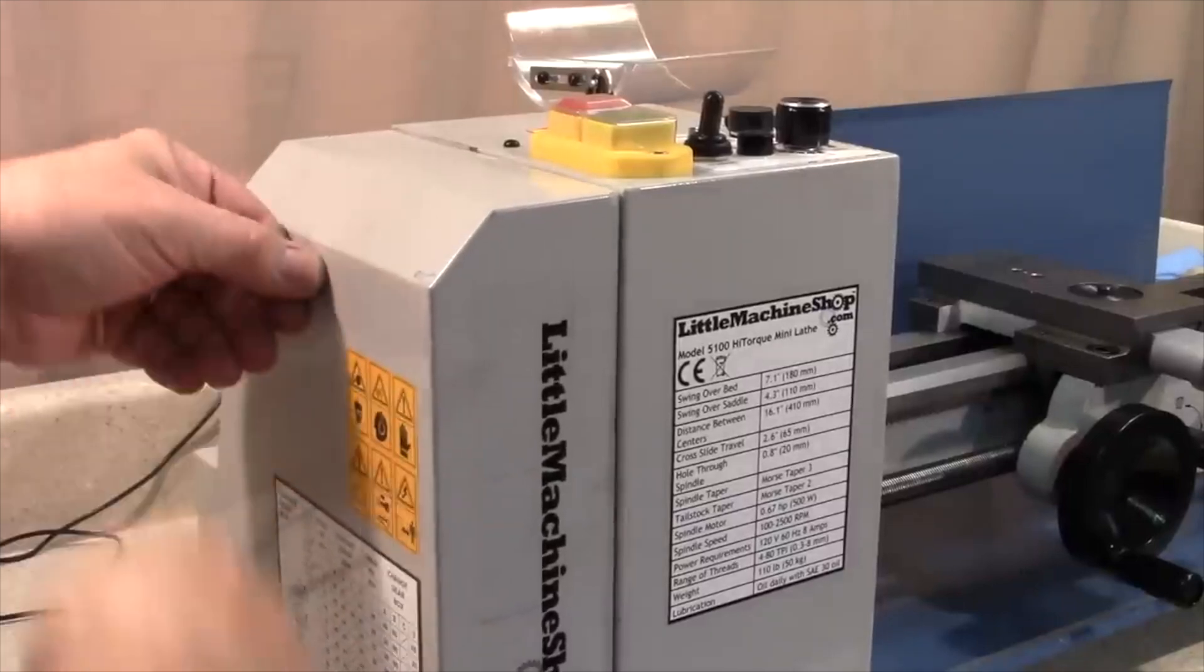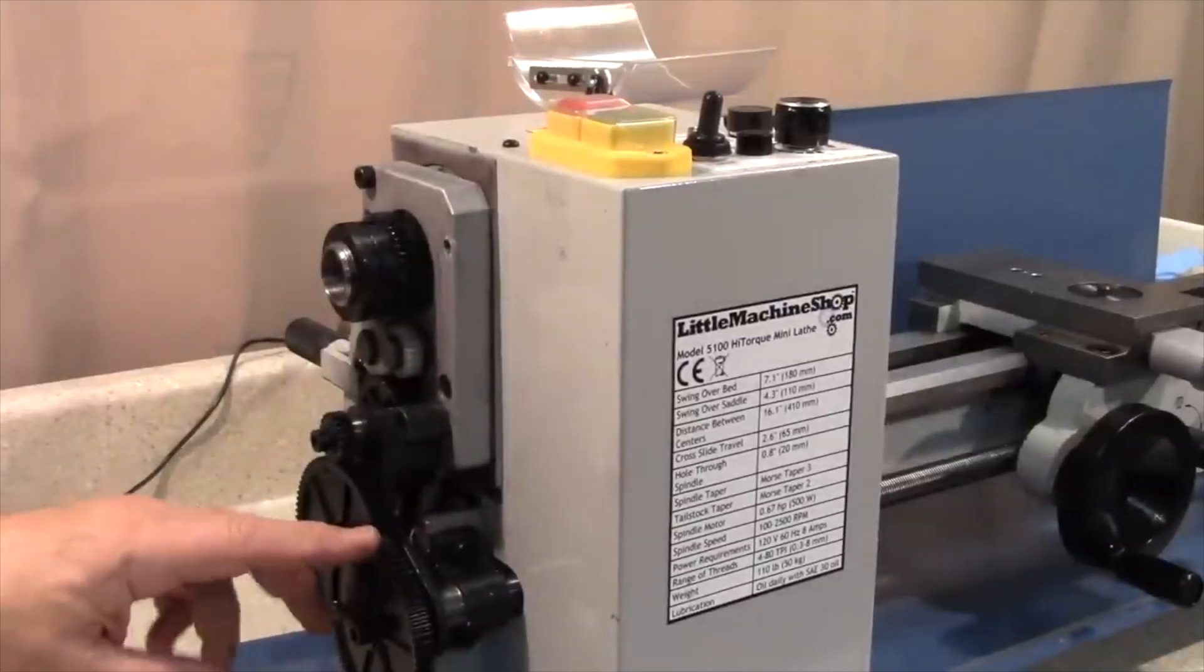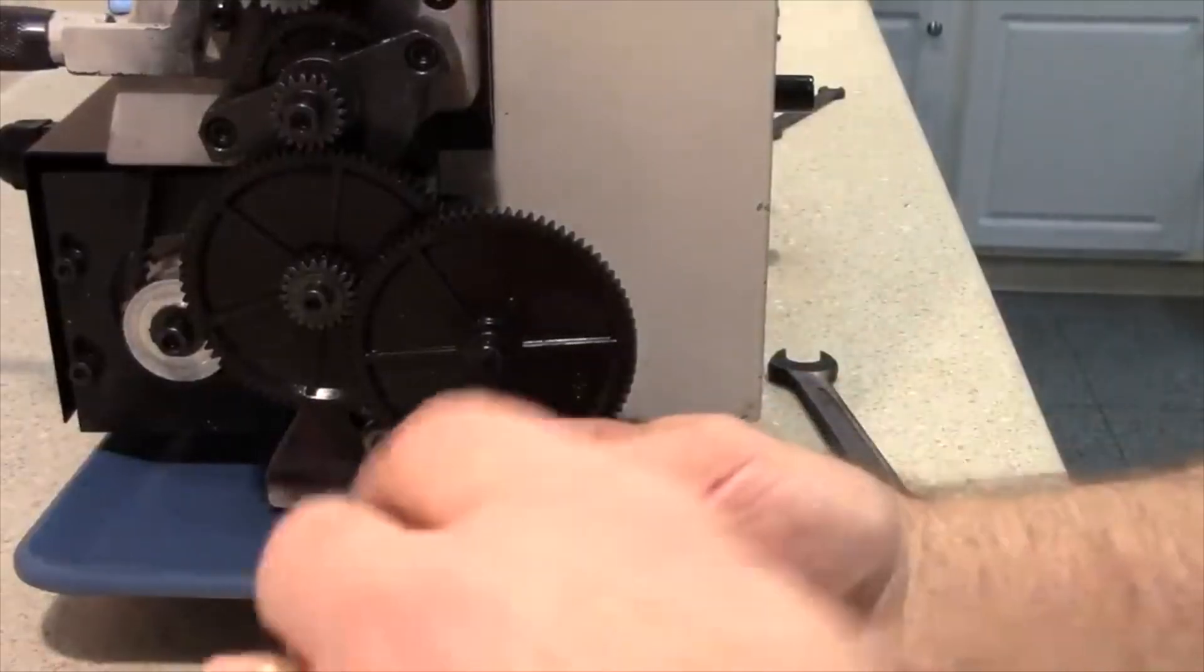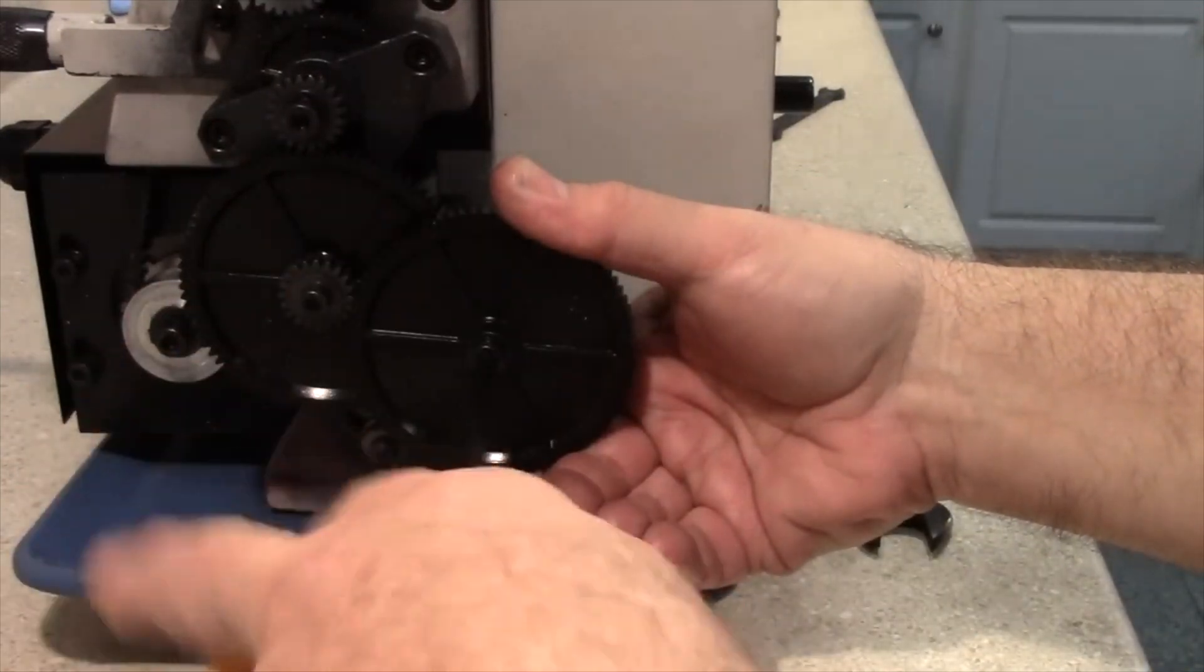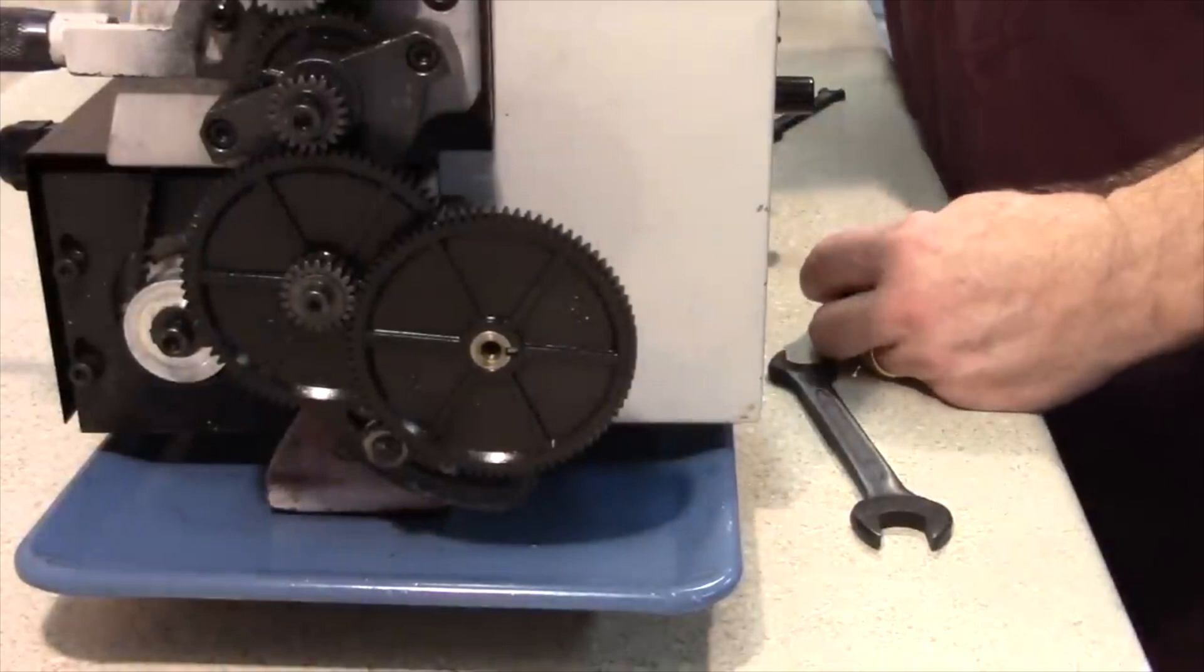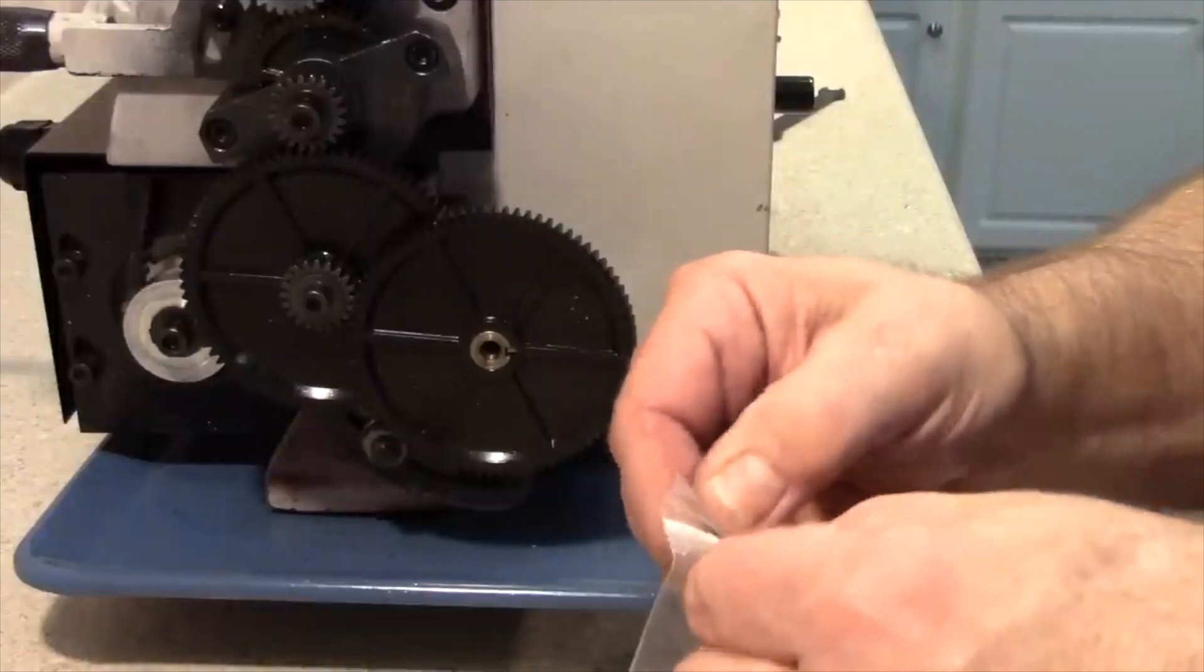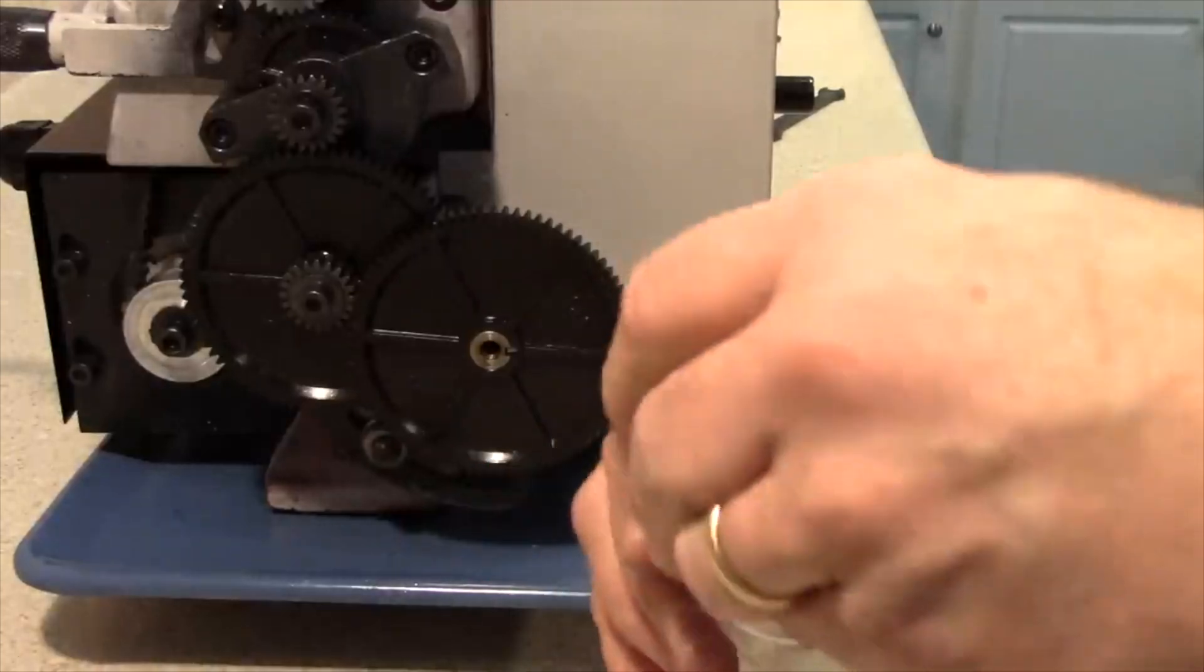There are two long bolts that hold the gear cover in place and you'll need a 4mm wrench to loosen those up. Just take them out and lift off the gear cover. Next we're going to remove this gear so we can gain access to the lead screw. We'll need a 5mm wrench here and you have to hold at the outer edge to keep it from turning. Let's get a plastic baggie and put those in there.